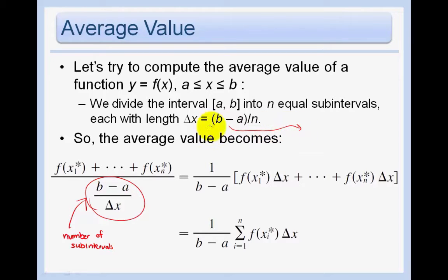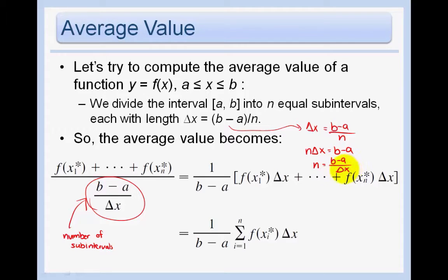Because delta x equals b minus a over n, so n times delta x equals b minus a. The number of subintervals that we're making is just b minus a over delta x, and so you'll see that these are the same. Now we just want to reduce this. Basically, you have a division problem, so we'll multiply by the reciprocal and we'll get delta x times the numerator all over b minus a.